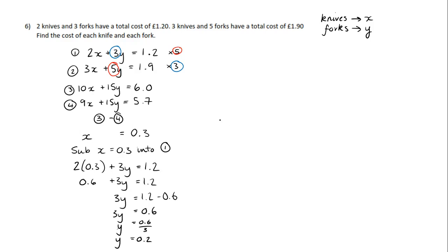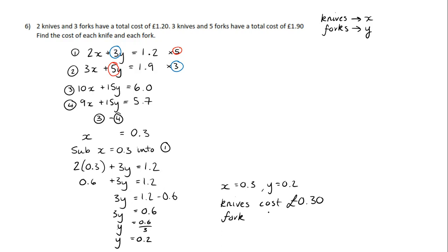So x equals 0.3 and y equals 0.2. The actual question asks for the cost of each knife and fork — so each knife costs 30 pence and each fork costs 20 pence.